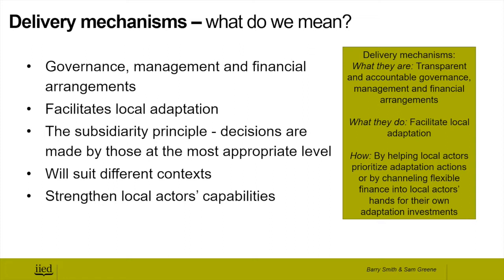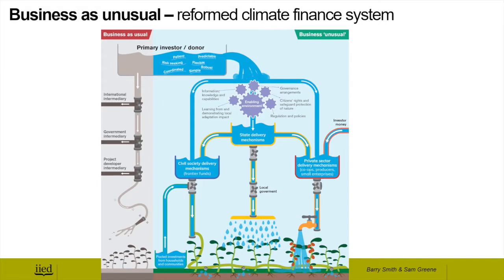Because climate change impacts, vulnerabilities, and socio-economic situations vary, different delivery mechanisms will suit different contexts — from state, private sector, and civil society sources. This diagram shows how the climate finance system can be reformed, contrasting the reformed system on the right against business as usual on the left. We need to move beyond small, isolated, community-based adaptation initiatives and instead focus on developing and strengthening institutions and mechanisms that deliver sustainable, locally led adaptation solutions at scale.